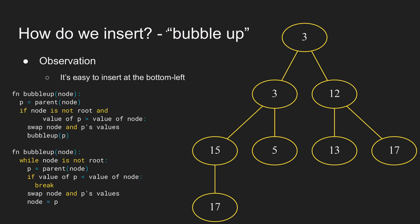The key observation for insertion is that it's easy to insert something at the bottom left of the binary heap. But if we insert, say, a 2 here, this breaks the heap property — we've invalidated the invariant, so now we have to fix it. We can push this value up the tree. So this 2 would swap with the 15. Then we compare this 2 with its parent, which is 3, so we push 3 down and push 2 up. This is called bubble up.